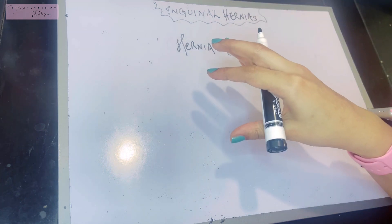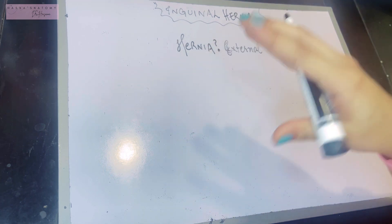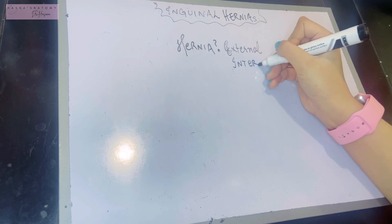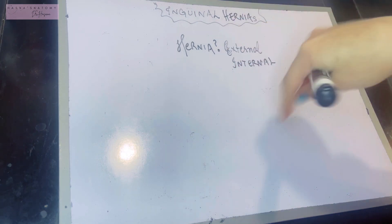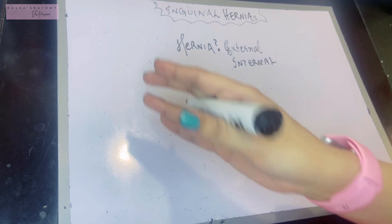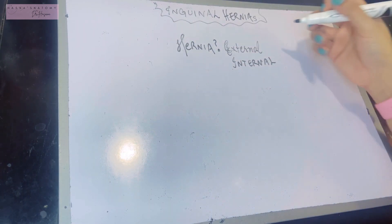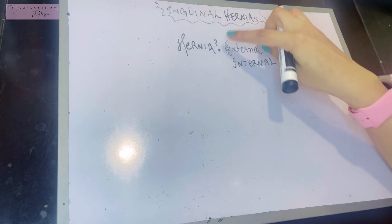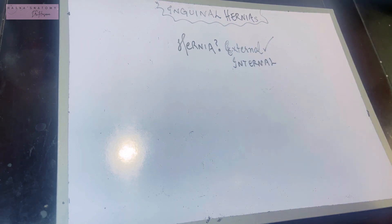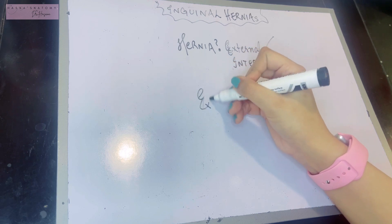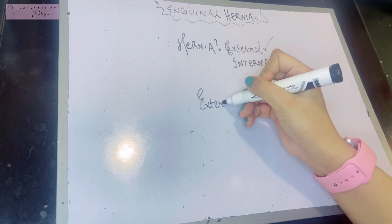External hernias are when abdominal contents go to other regions. However, there is another form known as internal hernias, where within the abdominal cavity, contents get into restricted zones where they are not allowed to be. But today our topic is mostly related to external hernias.